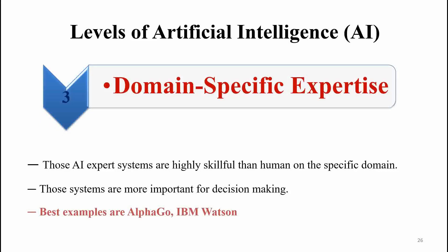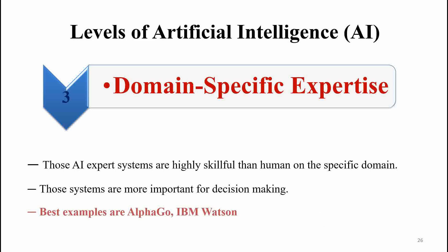The next thing is domain-specific expertise. The AI can be used for specific expertise in the labels of artificial intelligence. Those expert systems are highly skillful than humans on a specific domain — for example, in a specific area like programming.